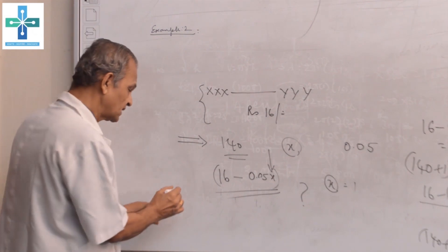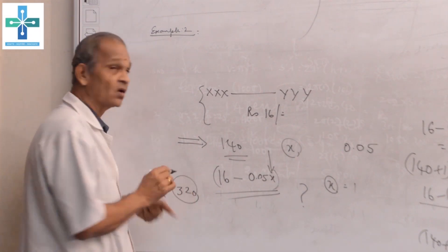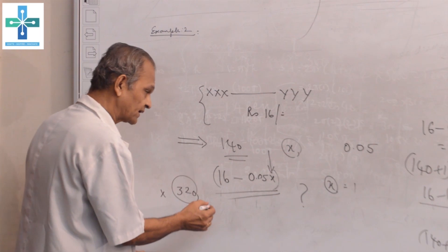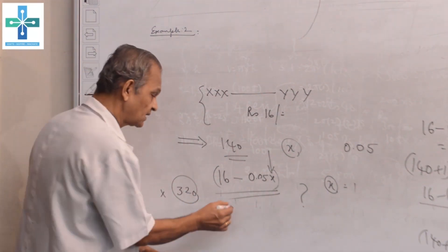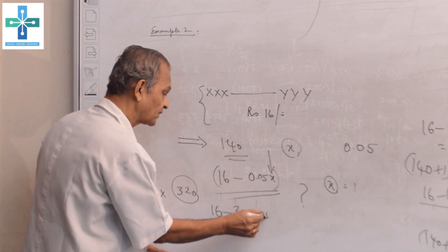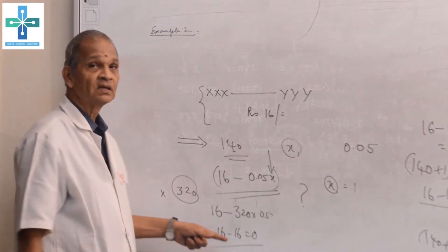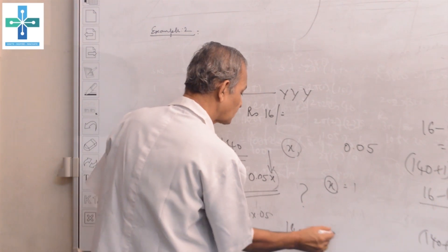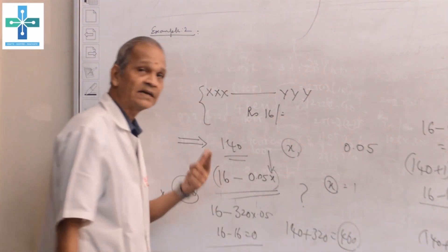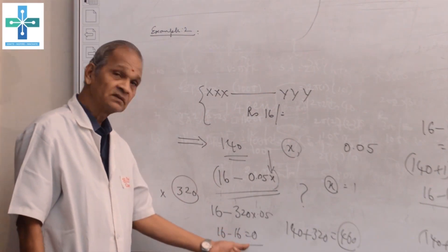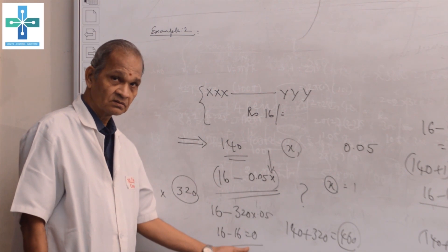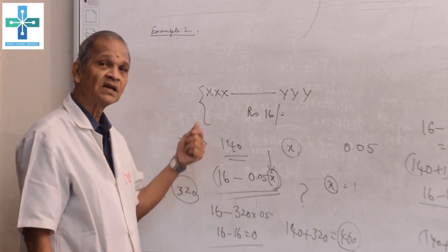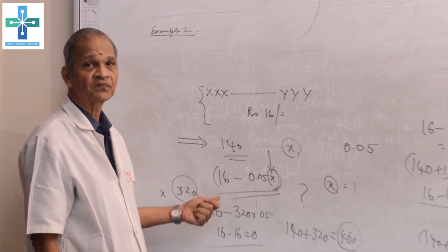If that goes on like that, at one stage, suppose if 320 passengers are more, the cost will be 16 rupees minus 320 times 0.05. 16 minus 16 equals 0. When 320 plus 140 equals 460 passengers travel one day, they need not buy ticket because that cost comes to 0. The trouble is, for what value of X, the transport owner will have the maximum income or maximum profit?